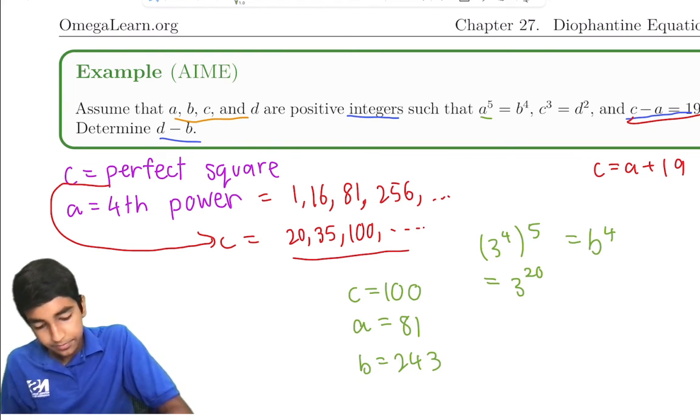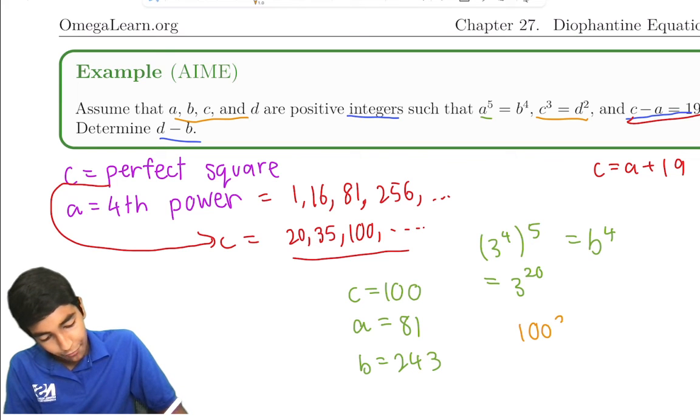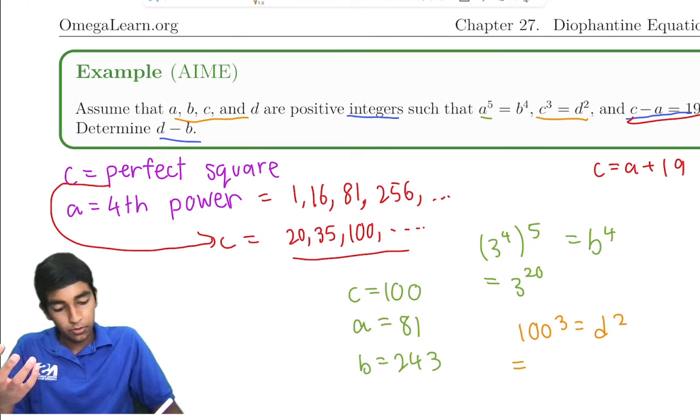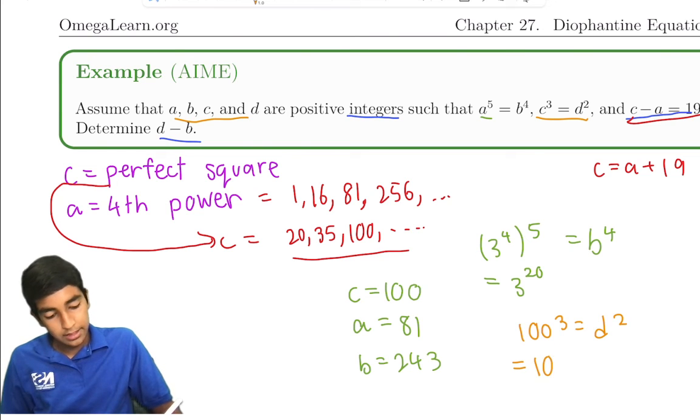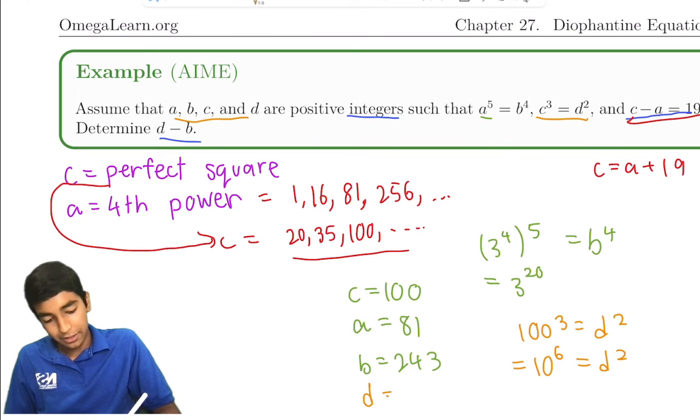Now for c. c³ = d². We know c is 100. So we solve for d. This left side is also (10²)³, which is 10⁶. It's d², so d is 10³. d becomes 10³, a thousand.